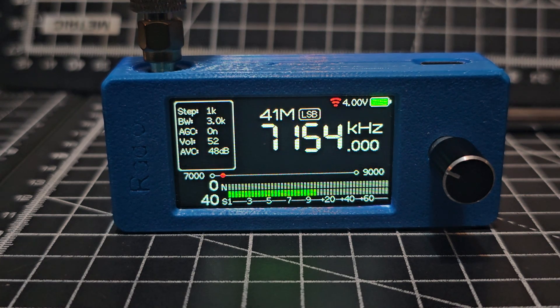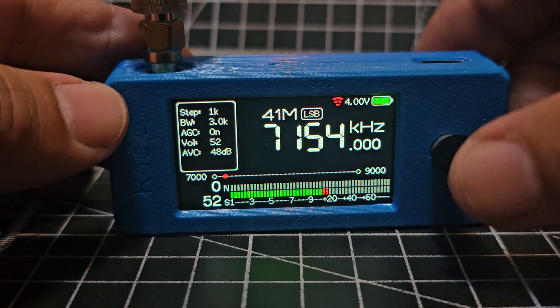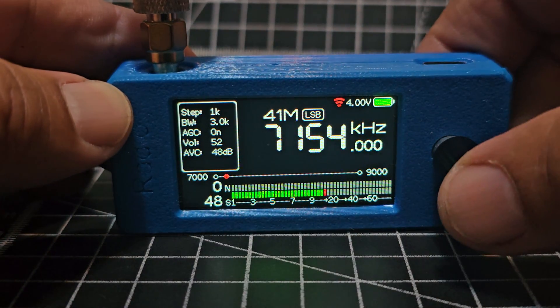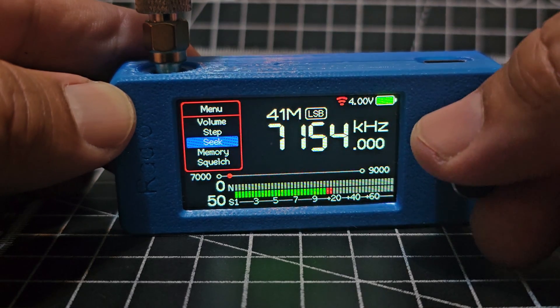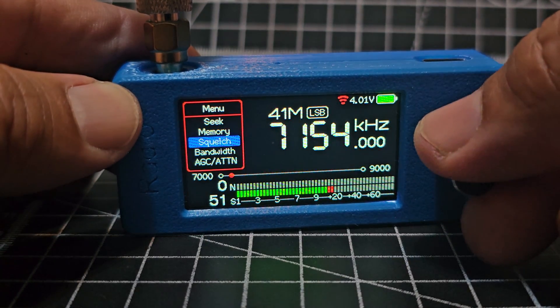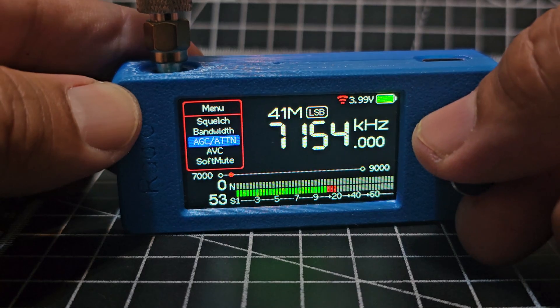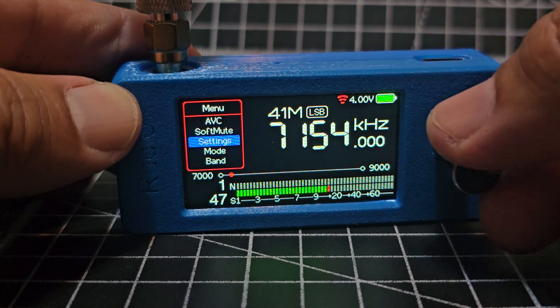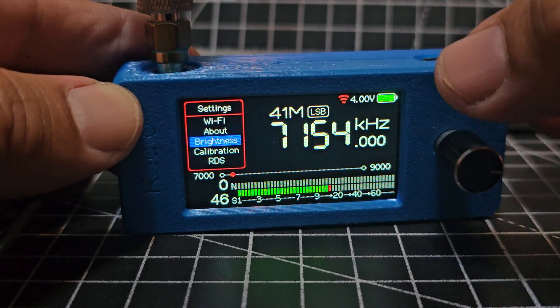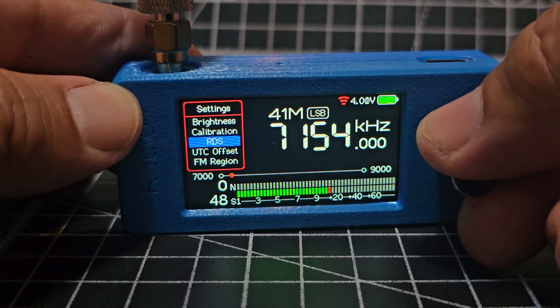Now we only have to press once, you see the signal meter. Press once, go down, we can select step, we can search, we've got memory, squelch, bandwidth, AGC adjustments there. If we go into the settings and scroll down calibrate, we've got RDS for broadcast radios.